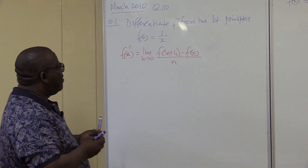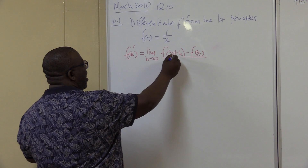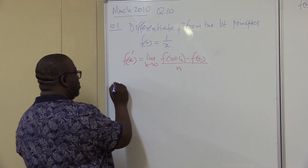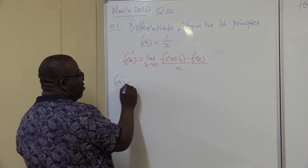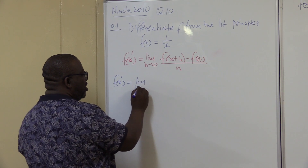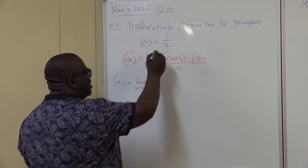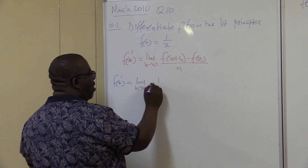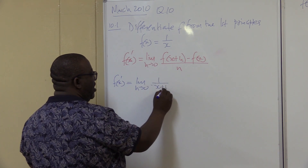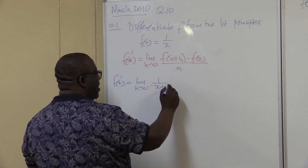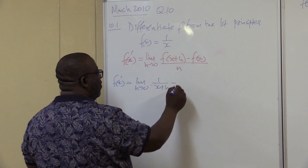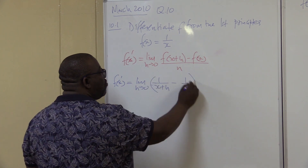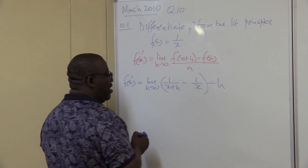It's the same story all over again. Wherever there is x, we push in x plus h. Once we are done, we subtract f of x. So f prime of x will be equal to the limit as h approaches 0. Where there is x, we push in x plus h — it's going to be 1 over x plus h. Then we subtract f of x, which is 1 over x. This is all divided by h.